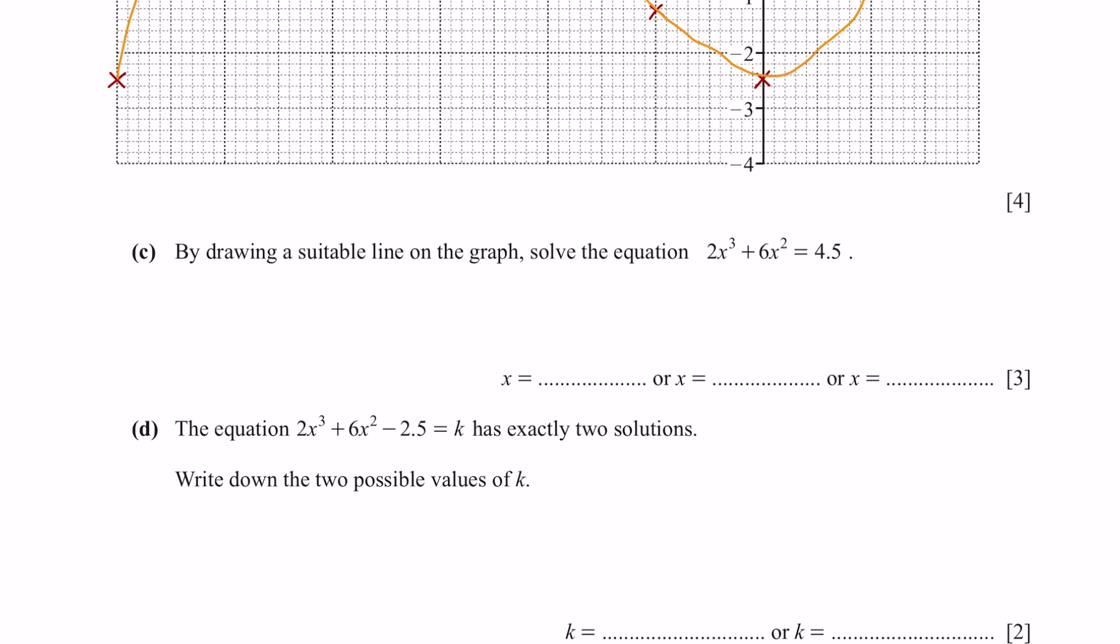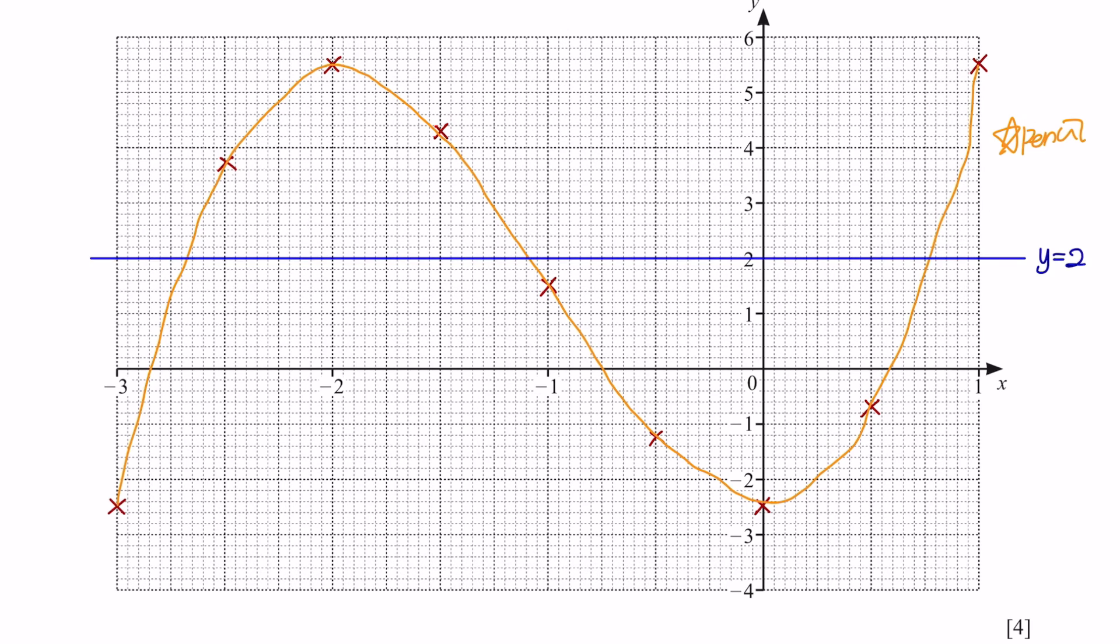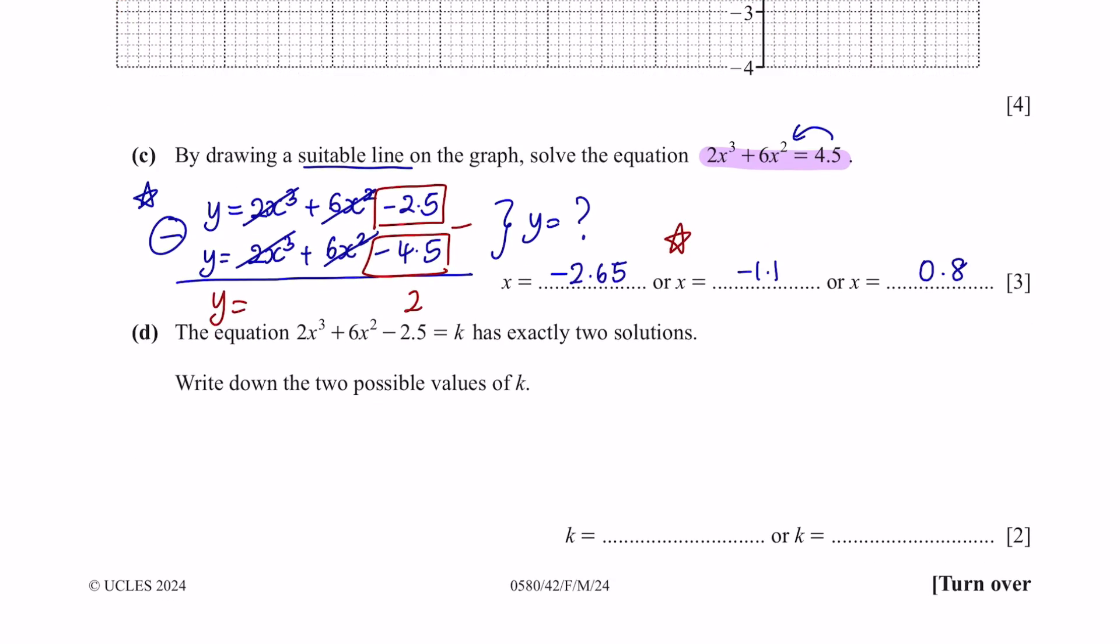Question C. By drawing a suitable line on the graph, solve the equation 2x cubed plus 6x squared equals 4.5. The existing equation that we have is like this. But currently, this equation is with a different y-intercept. So we need to find what is the value of y so that we can draw a suitable line on the graph. To do this, we can subtract this whole equation and find what is y. So negative 2.5 minus negative 4.5 is going to leave us with y equals 2. And now you're going to draw a straight line at y equals 2 and then find the points that it intercepts on the graph. And those would be the values of your x.